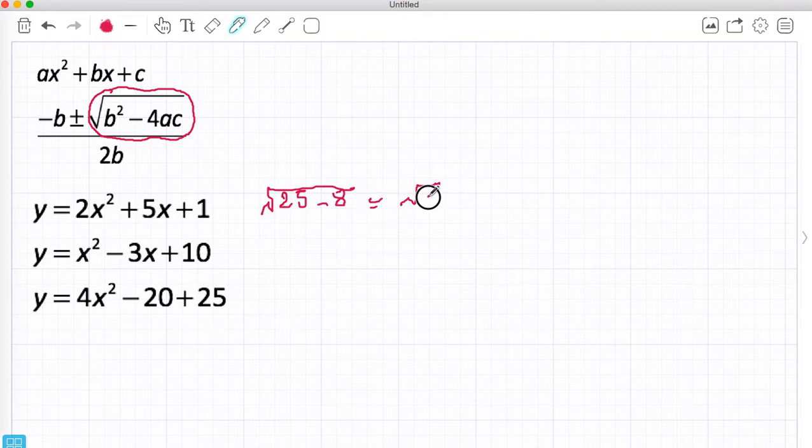Now this gives me a positive number, not really too concerned about exactly what that number is, it's 17. But that means I could do minus B plus or minus, plus square root 17 and minus the square root of 17 divided by 2B. It's going to give me two answers, two solutions.